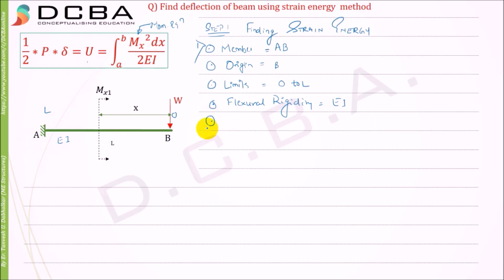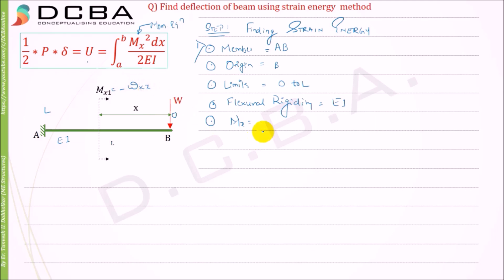Now the Mx equation. The bending moment here is W into x, but it is hogging — it creates a frowning face, a sad face — so it must be negative. Therefore Mx equals minus W·x. Mx squared then becomes W squared·x squared. Those are the terms we need, and now we can substitute them into the strain energy formula.